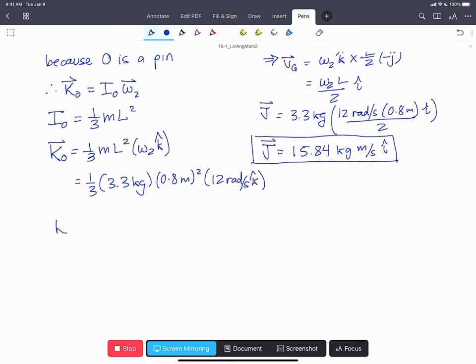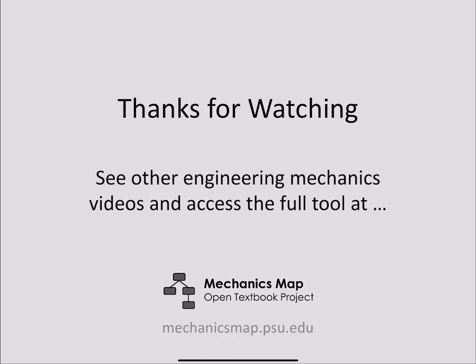And our total angular momentum about O is going to be 8.45 kilograms meters squared per second in the K hat. Thanks for watching this video. Find more videos and material at MechanicsMap.